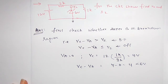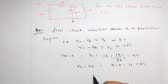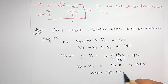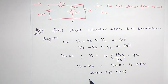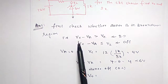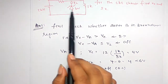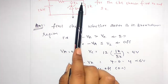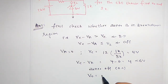The cathode-anode voltage is less than the breakdown voltage. Therefore, the Zener is in off state, which means it is in open circuit state. Therefore, output voltage equals — since it acts as open circuit, there is no use of this Zener — so the output voltage will be equal to 4 volts.